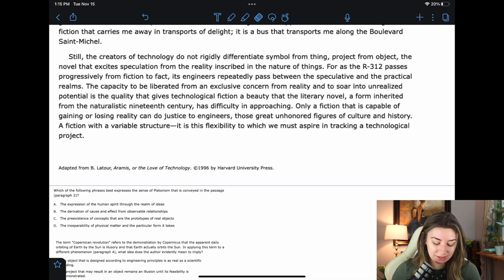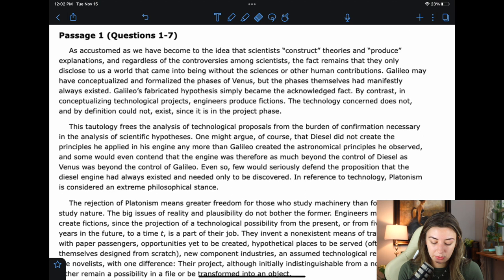Still, the creators of technology do not rigidly differentiate symbol from thing, project from object, the novel that excites speculation from the reality inscribed in the nature of things. For as the R312 passes progressively from fiction to fact, its engineers repeatedly pass between the speculative and the practical realms. The capacity to be liberated from an exclusive concern with reality and to soar into unrealized potential is the quality that gives technological fiction a beauty that the literary novel, a form inherited from the naturalistic 19th century, has difficulty in approaching. You see, they're kind of saying naturalistic in a bad way because that's in the sciences realm. Only a fiction that is capable of gaining or losing reality can do justice to engineers, those great unhonored figures of culture and history.